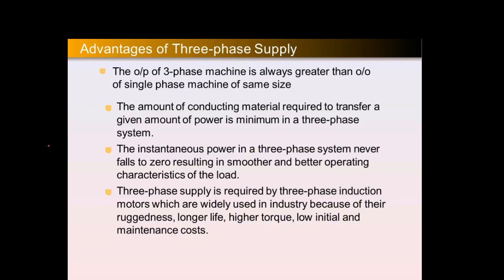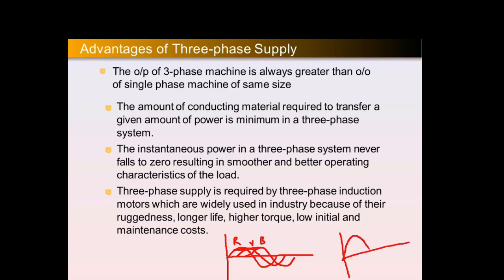The instantaneous power in a three-phase system never falls to zero, resulting in smooth and better operating characteristics of the load. In a single-phase system, the instantaneous power is zero at different instances — at π and 2π — whereas in the three-phase system, power remains continuous. This is why three-phase systems operate in a smoother way with better load characteristics.